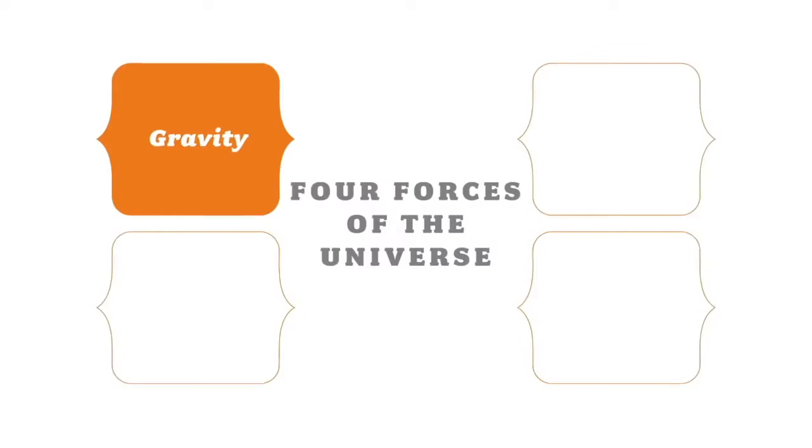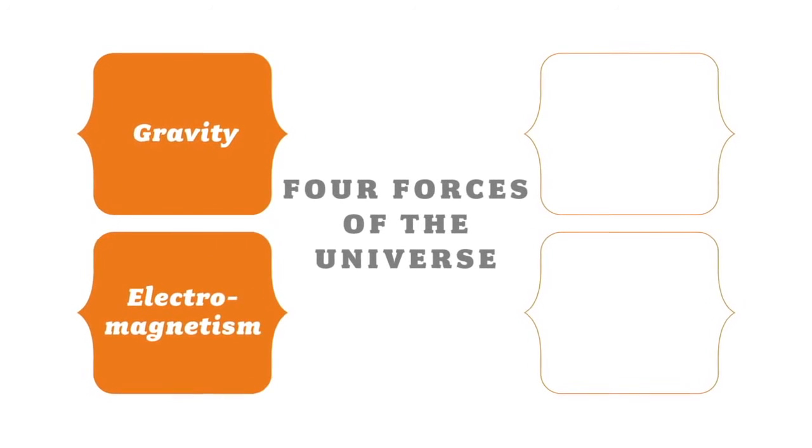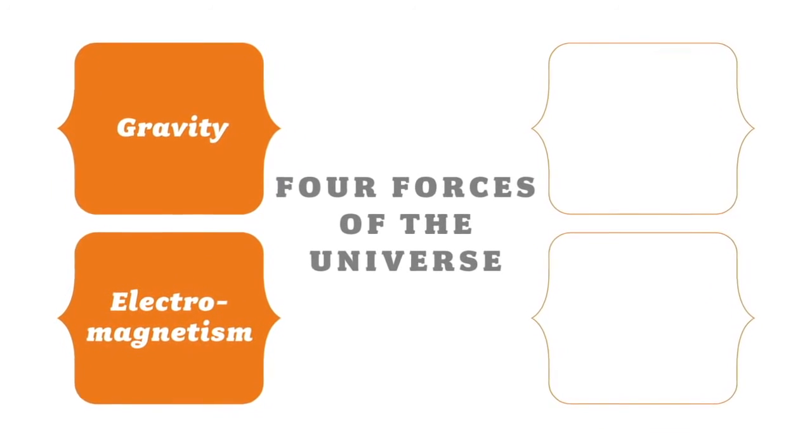We once thought that electricity and magnetism were separate. Now we know they are in fact the same force. So if a moving magnet can create an electric field, this means that a moving electric field can create a magnetic field.